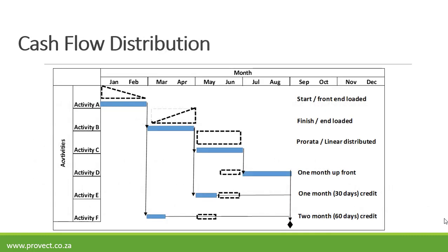With regard to cash flow distribution, on this slide we have Activity A to Activity F. Activity A represents your start or front-end loaded activity. Activity B represents your finish or end-loaded activity where payment is made towards the end of the activity. Activity C is pro rata or linear distribution — equal payments are made monthly. Activity D represents a one month upfront payment, so if the activity starts in July, you need to pay in June.